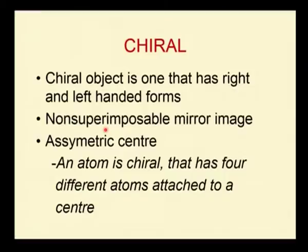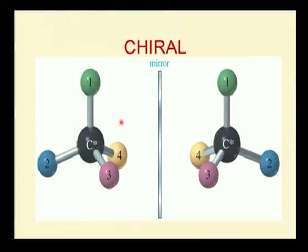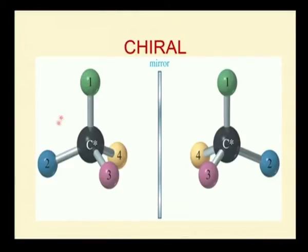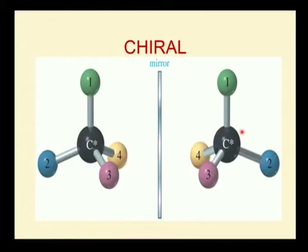What is an asymmetric centre? An asymmetric centre is a centre that has four different groups attached to it. For example, consider a carbon with four different groups labeled 1, 2, 3, 4, differentiated by colours. When you place a mirror image of this molecule, you get the mirror image, not the original molecule. If I place the original molecule above the mirror image molecule, both are not identical, demonstrating chirality in a molecule.